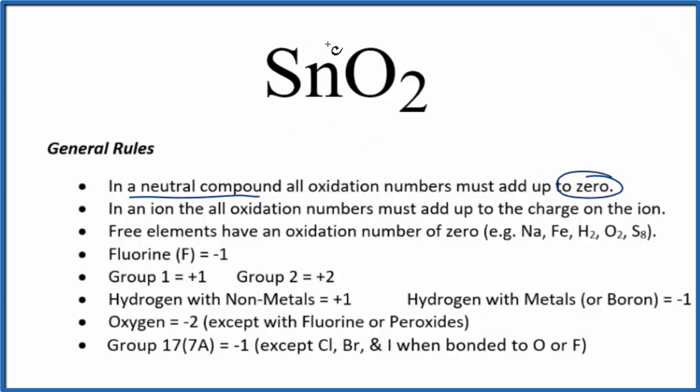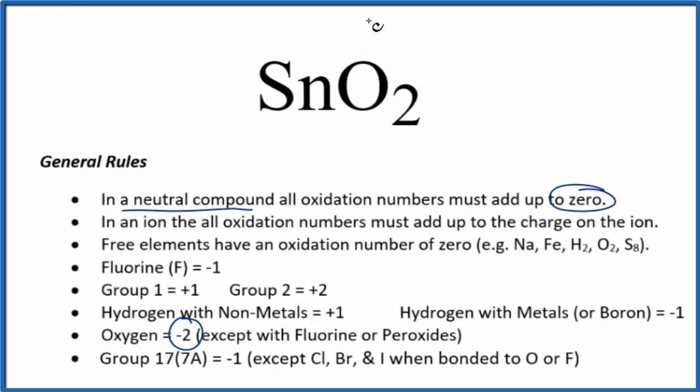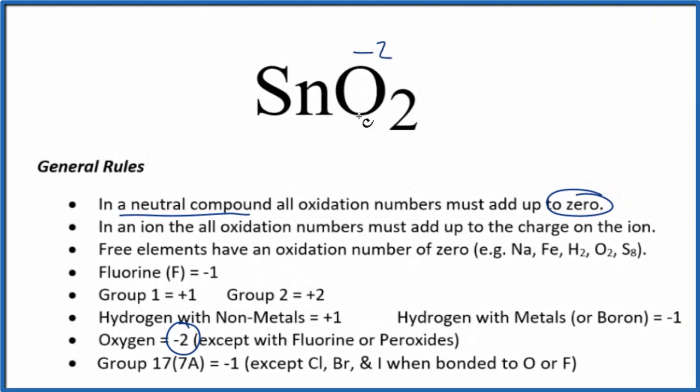We can't tell the oxidation number on the tin here just by looking at it. It's a transition metal, so it can have different oxidation numbers depending on what it's bonded to. But we do know that O₂, that oxygen, we have a negative 2 as our oxidation number for each oxygen here. There are some exceptions to that rule, but tin is not one of the exceptions.